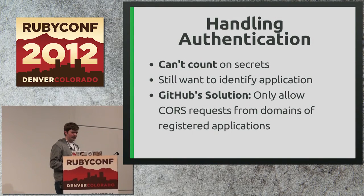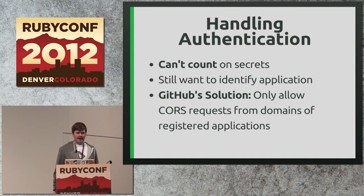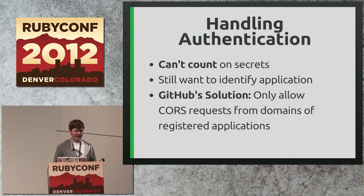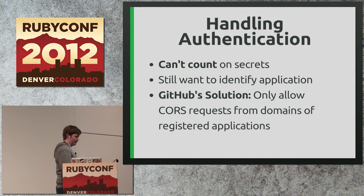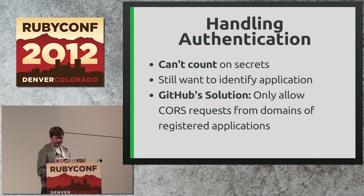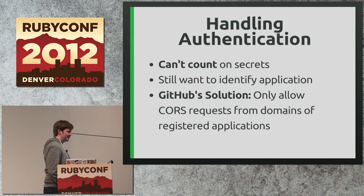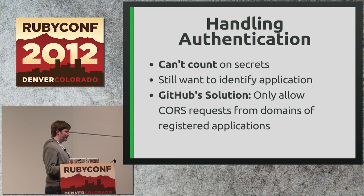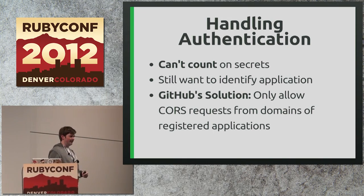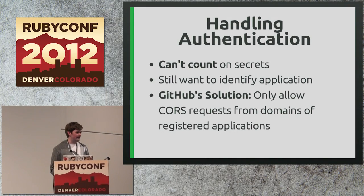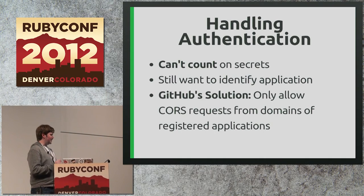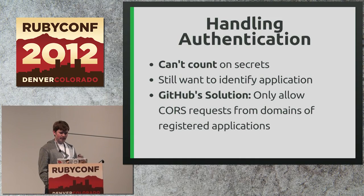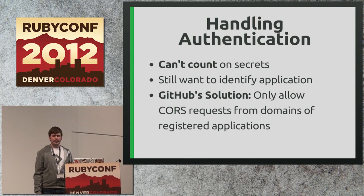One thing to think about when implementing this on a public API is how to handle authentication. In the browser you can't count on secrets being kept. But you still want to identify applications so you can remove bad actors. GitHub's solution is that they only allow CORS requests from domains of registered OAuth applications. So if I register an OAuth application at mbli.github.com, I can make CORS requests to the GitHub API from that domain. It still lets you identify an application — it looks at the origin of the request and says 'this is coming from mbli.github.com, so this is Michael's GitHub API application.' That's a clever way to solve this problem.